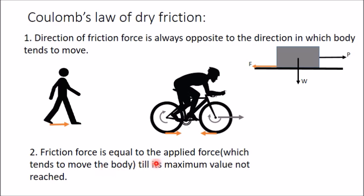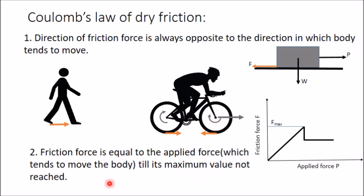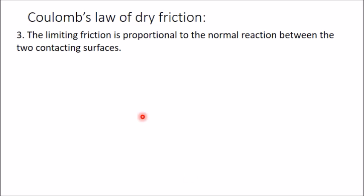The second law states that friction force is equal to the applied force which tends to move the body, up to its maximum value. As we discussed, when the applied force is less than the maximum, friction force equals the applied force. This continues until the applied force reaches the value corresponding to the maximum friction force.